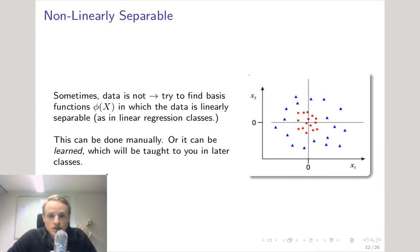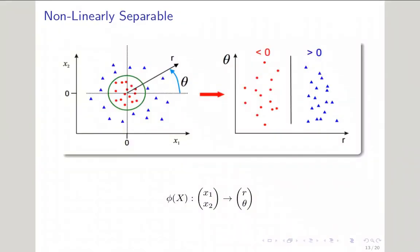In the later lectures, we will cover ways to automatically learn the best basis functions to use to classify the data. But today, we're going to stick with common functions. For example, what's an example of a basis function that would work to correctly classify this data that you see here? It's obvious that a simple linear classifier is not going to work. So what do you do? Here's one way of doing it. We create a basis function that transforms our coordinates into polar coordinates.